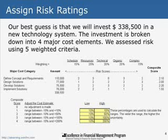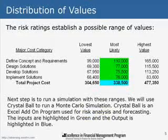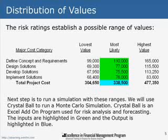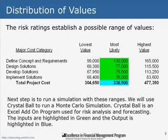For example, if we had a risk score of two, the single-point cost estimate for that component would be 10% less on the low end and 50% higher on the high end. Once we understand these ranges, that creates what we call a three-point cost estimate, or a triangular distribution. For the phase 'Define Concept and Requirements,' the low end — best-case scenario — would be $99,000; the most likely estimate was $110,000; and the worst-case scenario is $165,000.